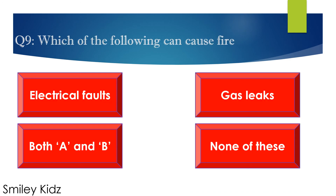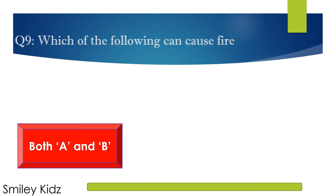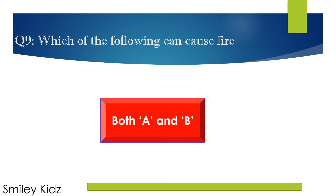Question number 9. Which of the following can cause fire? Options are A. Electrical faults, B. Gas leaks, C. Both A and B, and D. None of these. Your time starts now. Your time is up. The right answer is both A and B. Electrical faults and gas leaks can cause fire.